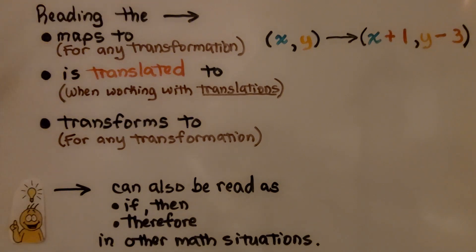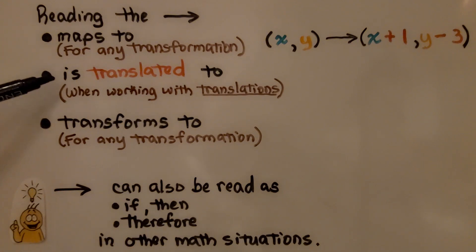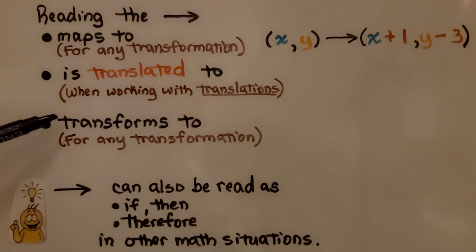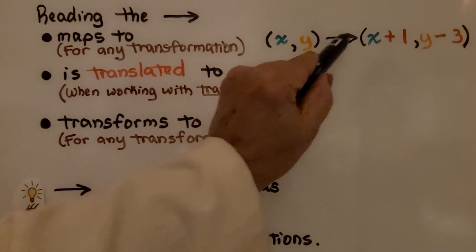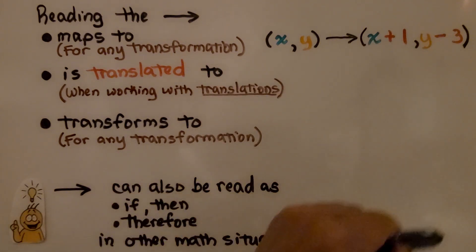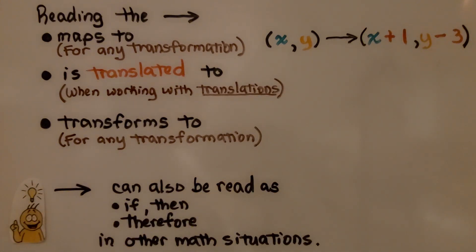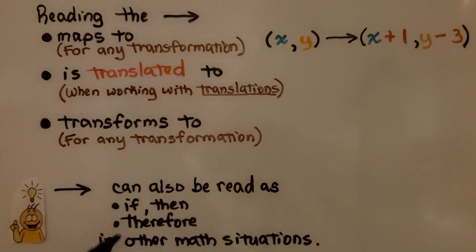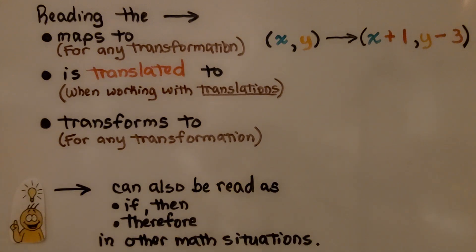When reading the arrow notation, we can say 'it maps to' for any transformation, 'it is translated to' when working with translations, or 'it transforms to' for any transformation. The arrow can also be read as 'if...then' or 'therefore' in other math situations. We could say: (x, y) translates to (x+1, y−3), or (x, y) maps to (x+1, y−3), or if (x, y) then (x+1, y−3). As you continue in algebra and geometry, you'll find arrow notation more often in equation notation.